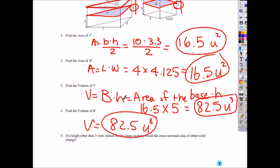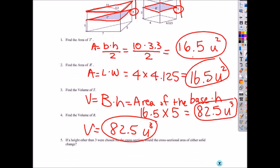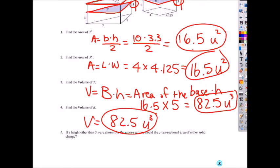So if a height other than 3 were chosen for the cross-section — you see how they found the area of the cross-section when the height was 3 — if they chose a different cross-section at a different height, would the cross-sectional area change? No. It will still be the same as its base, which is the same as the cross-section at a height of 3.